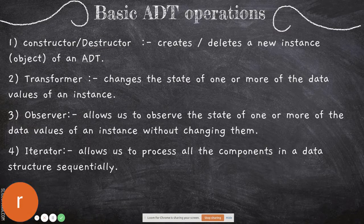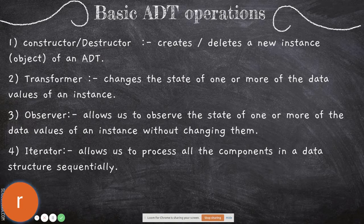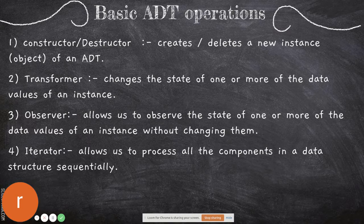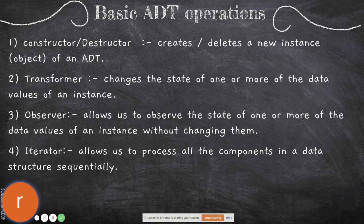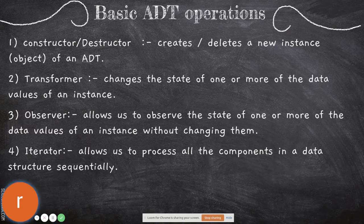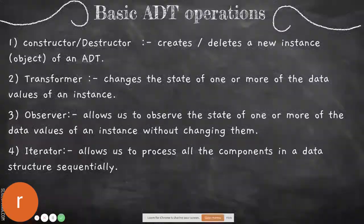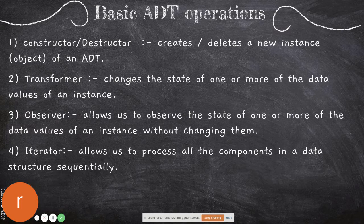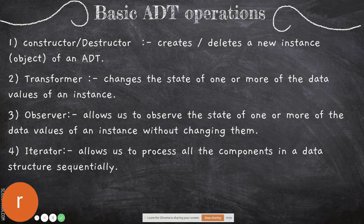Iterator allows us to process all the components in a data structure sequentially. For example, if I'm going to print values stored in a linked list, I will use an iterator. It may be a for loop, do loop, or while loop depending on the language. In an iteration, we process - for example, if I want to print all values in a set of objects, I extract one by one instance and see what is stored in it through the iterator.